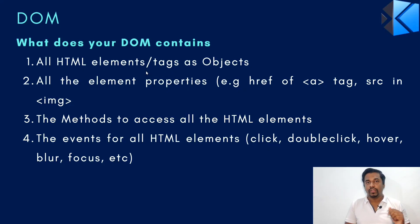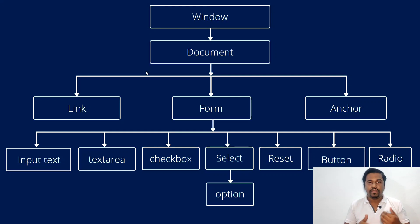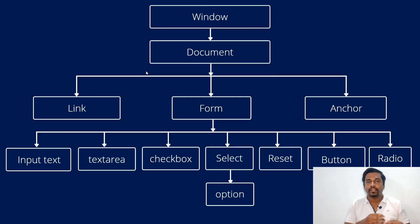DOM is essentially a tree hierarchy. The initial part is your window, then comes the document object — as we previously saw in the console — and then all the links, form tags, anchor tags, and everything is rendered into the same tree structure. Even within a form, there can be many form elements: input tags, checkboxes, radio buttons, dropdowns — the select tag for a combo box — and under select we have options, reset buttons, and submit buttons. All these things are part of your body, and part of your body means they are part of your DOM.